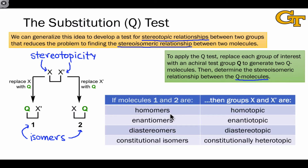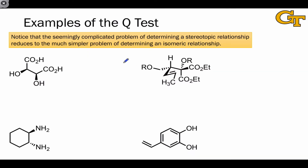If the molecules 1 and 2 are homomers — just the same molecule drawn from two different viewpoints — then groups X and X' are homotopic. If the molecules are enantiomers, then the groups are enantiotopic. If they are diastereomers, the groups are diastereotopic. And if they are constitutional isomers, then groups X and X' are constitutionally heterotopic. The beauty of this test is that it reduces a seemingly complicated problem — finding a stereotopic relationship between two groups in a single molecule — to the simpler problem of determining an isomeric relationship between a pair of molecules.